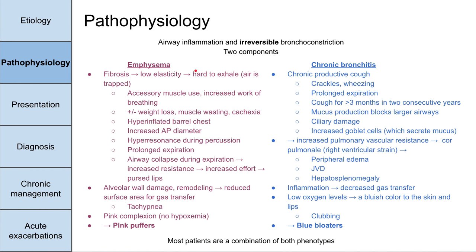In emphysema, you have fibrosis in the lungs which leads to lower elasticity, making it harder to exhale. Air is trapped — that's what makes it an obstructive airway disease. You might notice these patients using their accessory muscles and intercostals to exhale. There's increased work of breathing, which can cause weight loss and muscle wasting or cachexia. On exam, they can have a hyperinflated barrel chest with increased AP diameter.